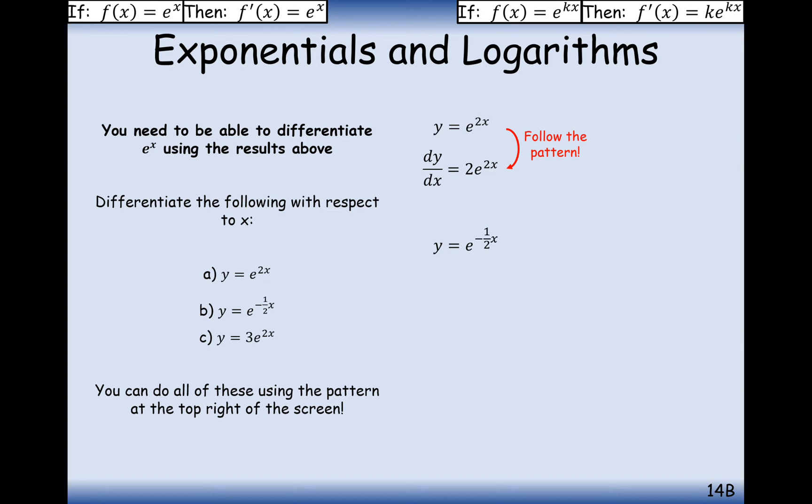For y equals e to the minus half x, you bring the minus half to the front, and then it's e to the minus half x. And for 3e to the 2x, you bring the 3 forward, then it would times by the 2 forward, and it would times by the 3 to make 6e to the 2x.